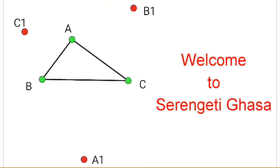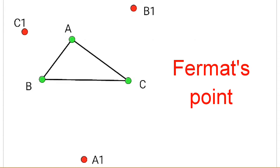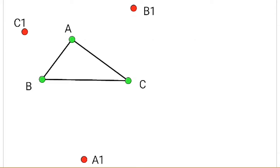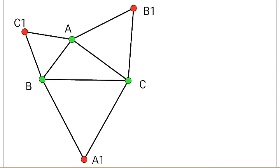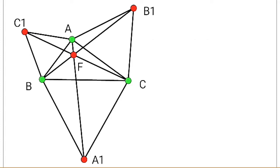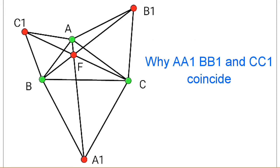Welcome to this channel. In this video we will discuss the Fermat point and some related topics. Given triangle ABC, and points A1, B1, C1 such that AB1C, BCA1, and ABC1 are equilateral triangles, then by joining AA1, BB1, and CC1 they will meet at a point F, known as the Fermat point. We will discuss why AA1, BB1, and CC1 coincide at point F.